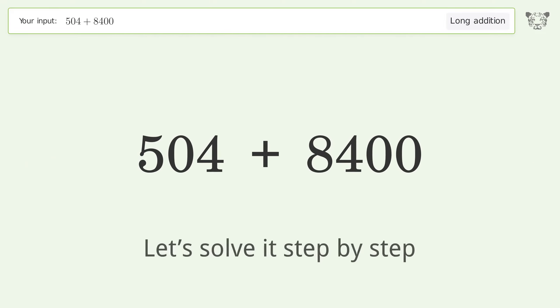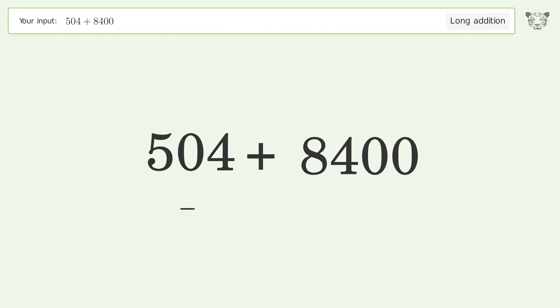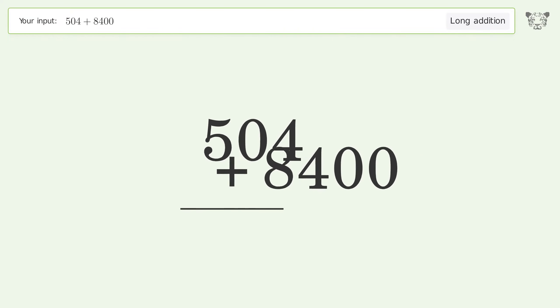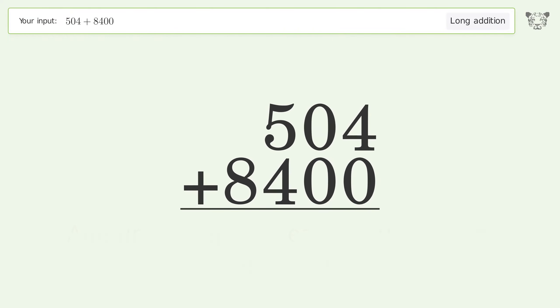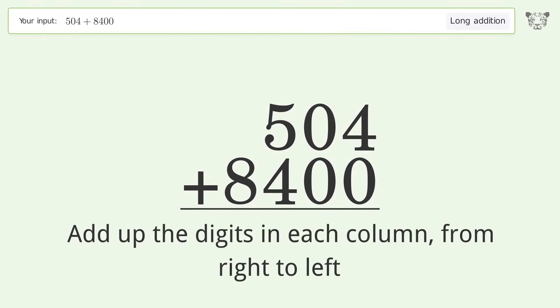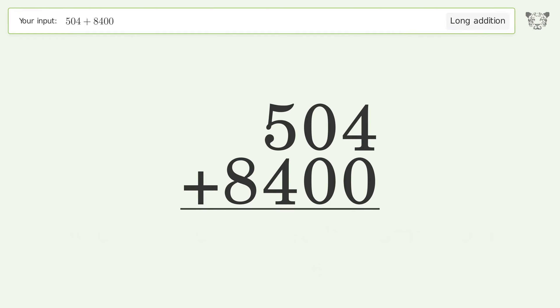Let's solve it step by step. Rewrite the numbers from top to bottom aligned by their place values. Add up the digits in each column from right to left. 4 plus 0 equals 4.